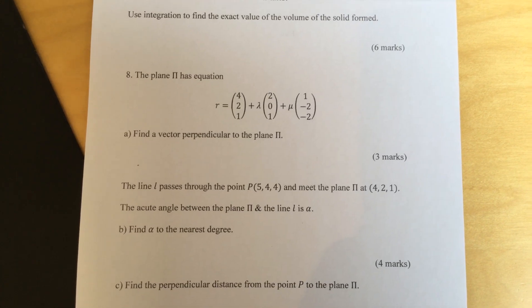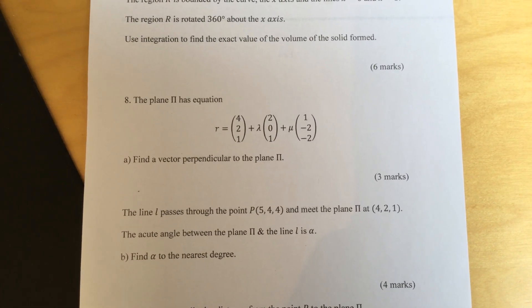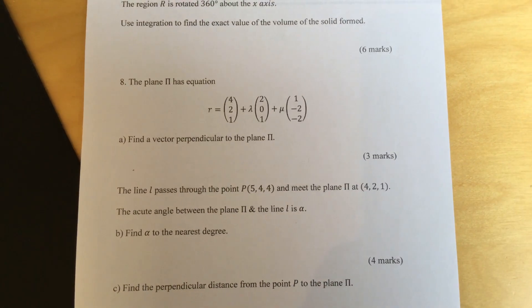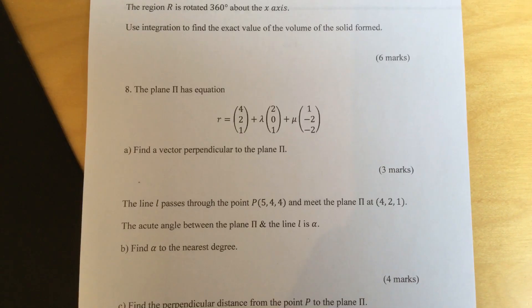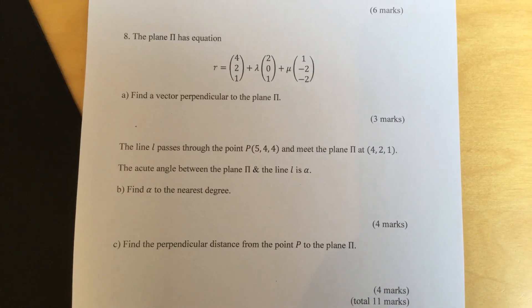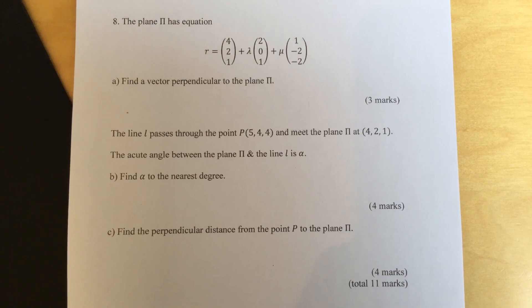The line l passes through the point P(5, 4, 4) and meets the plane π at (4, 2, 1). The acute angle between the plane π and the line l is α. Part b, find α to the nearest degree. Part c, find the perpendicular distance from the point P to the plane π.